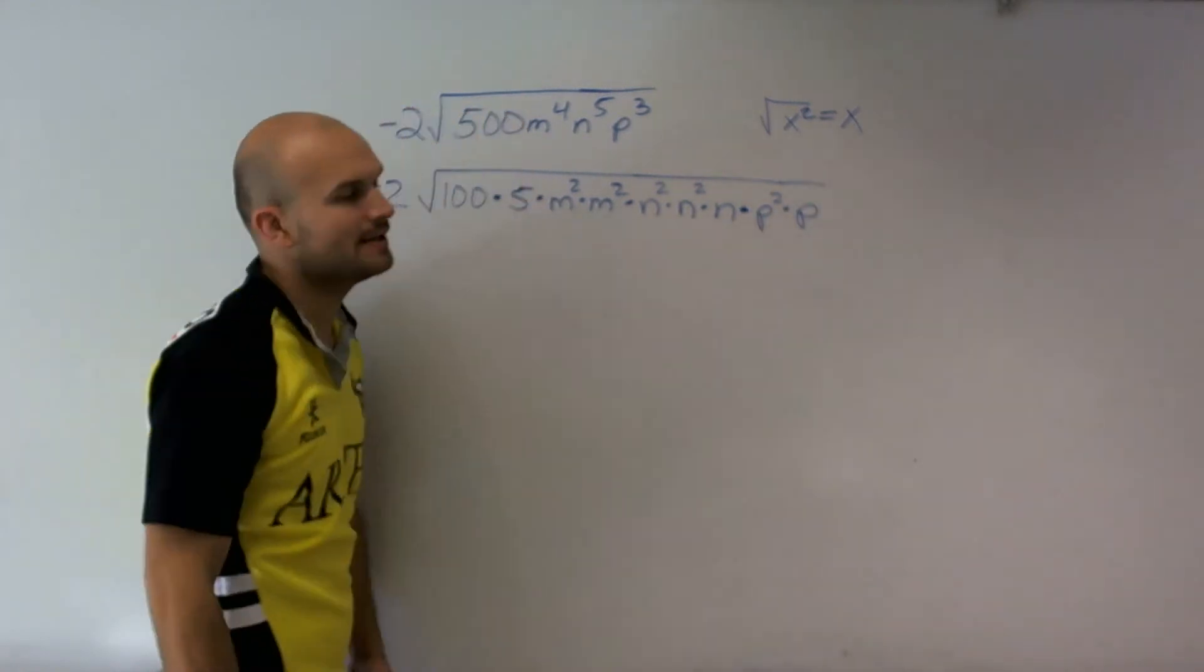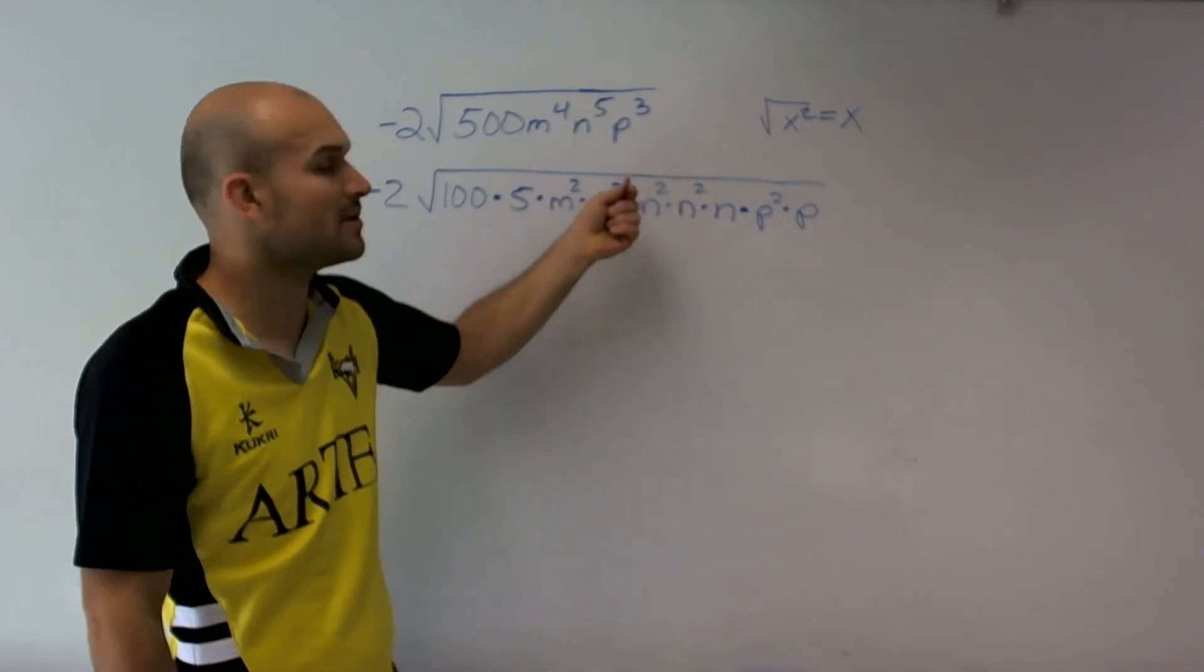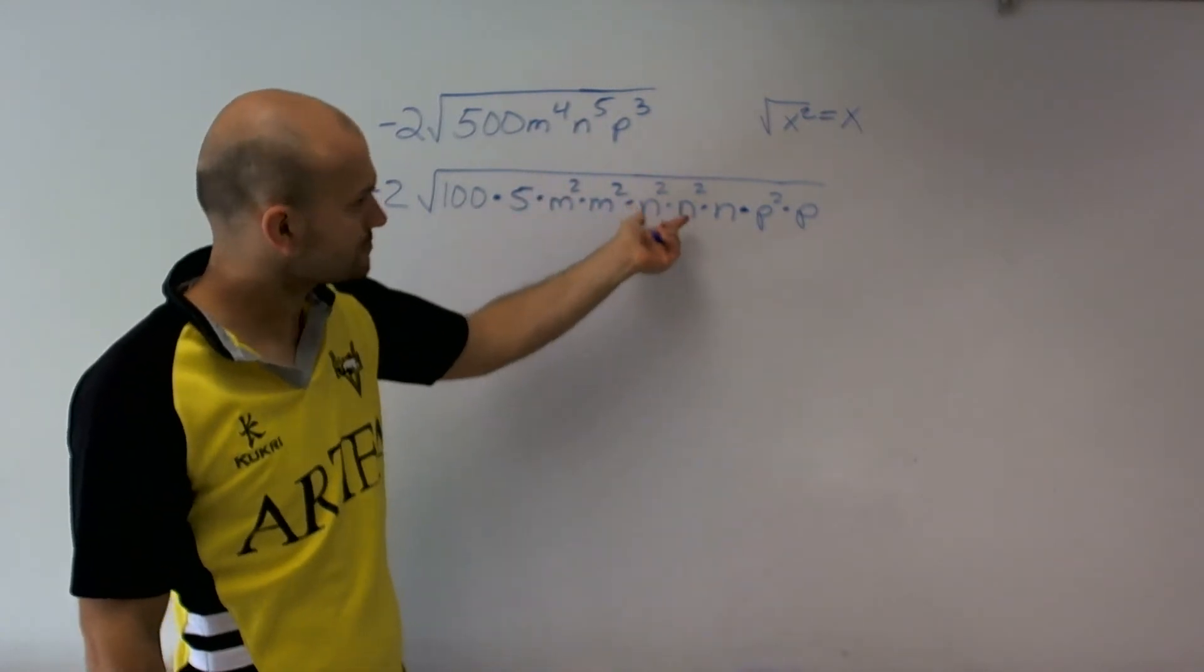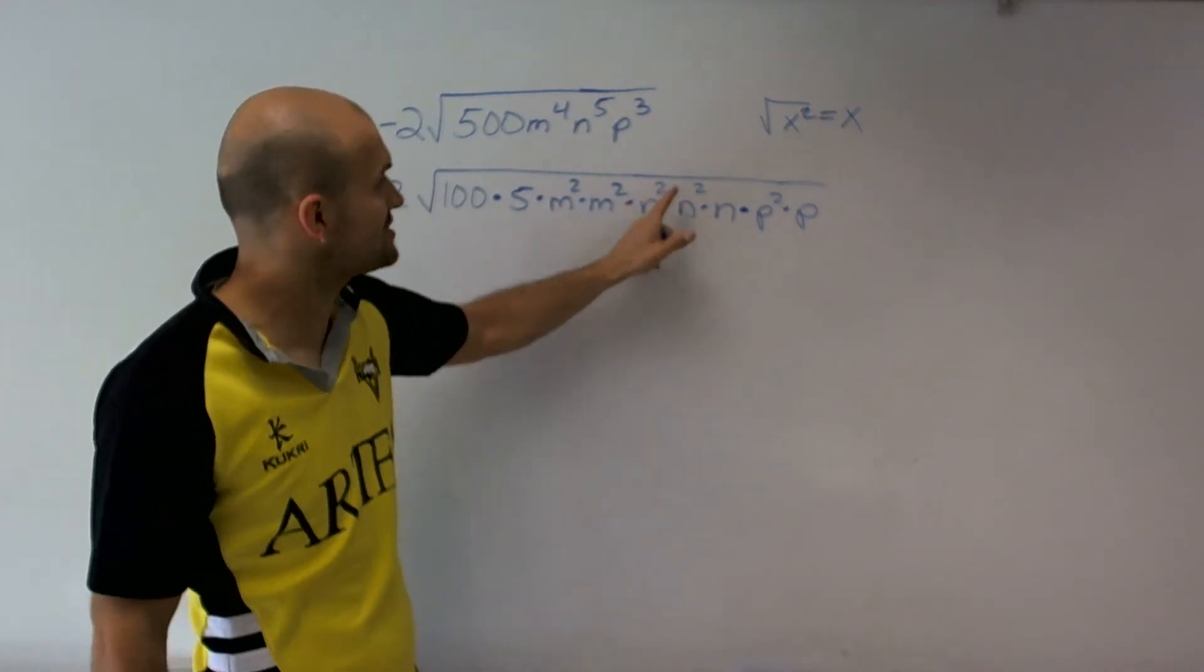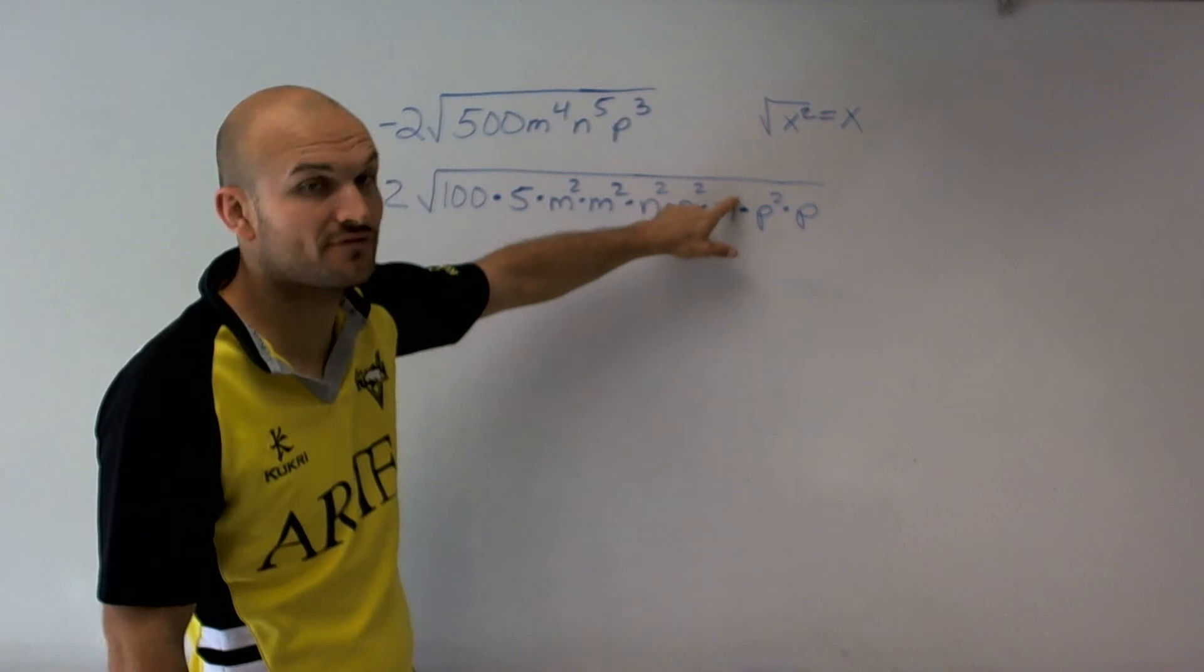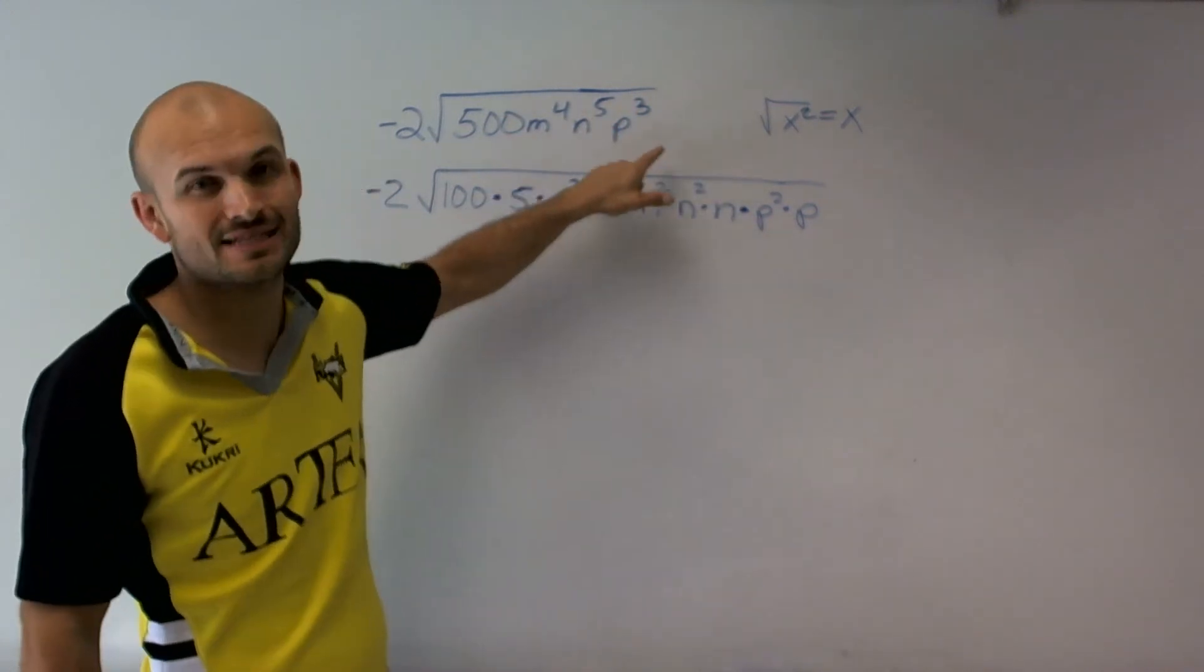Now why am I multiplying all these out? Remember that when we multiply numbers with exponents, we add the exponents. That's how I get n squared times n squared times n to the 1st power equals 2 plus 2 plus 1, which is going to get n to the 5th.